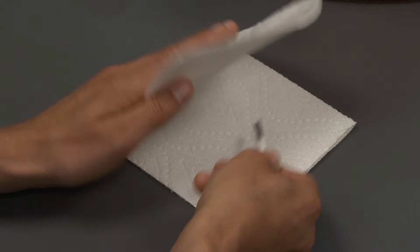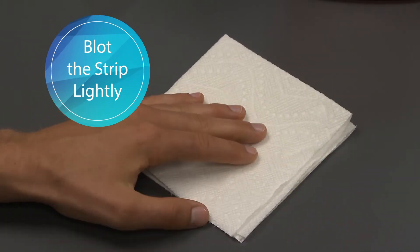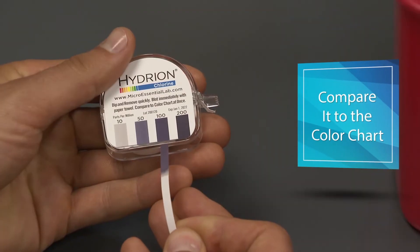Remove the test strip from the solution and blot it lightly with a paper towel. Compare the color on the strip with the kit's color chart.